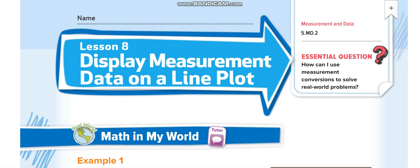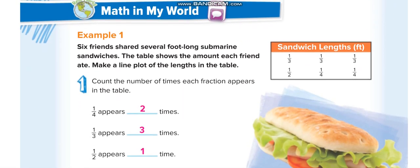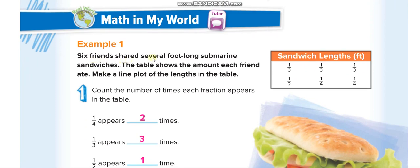In this lesson, look at this first example: six friends shared several foot-long submarine sandwiches. The table shows the amount each friend ate. Make a line plot of the lengths in the table. There are six friends and each of them ate this much sandwich — the first ate one-third, one-third, one-third, the fourth ate one-half, the fifth one-quarter, and the sixth one-quarter.